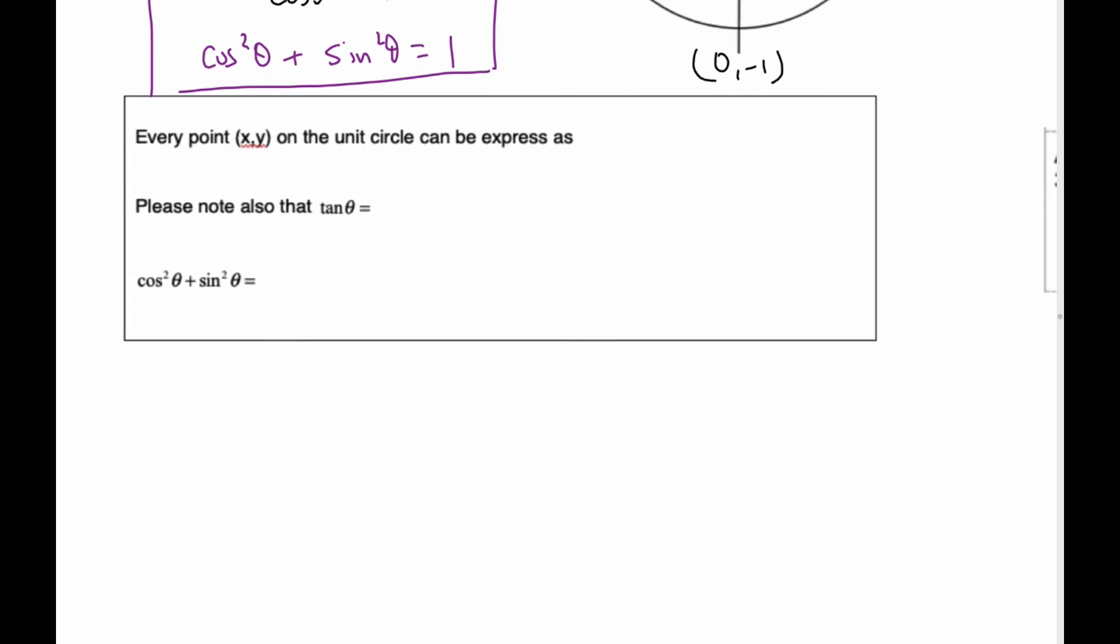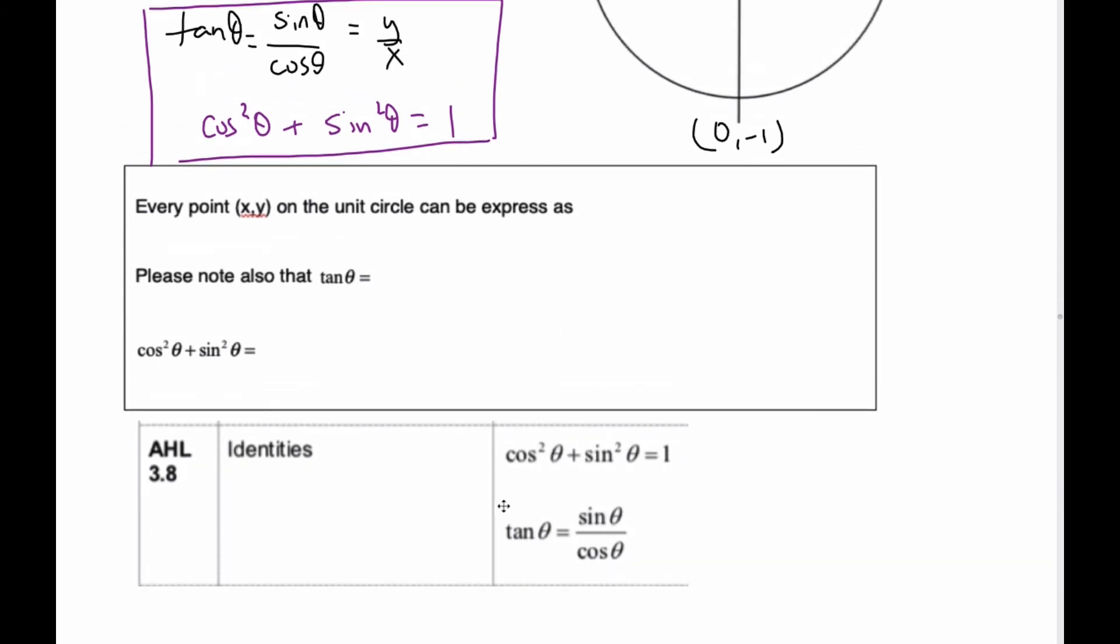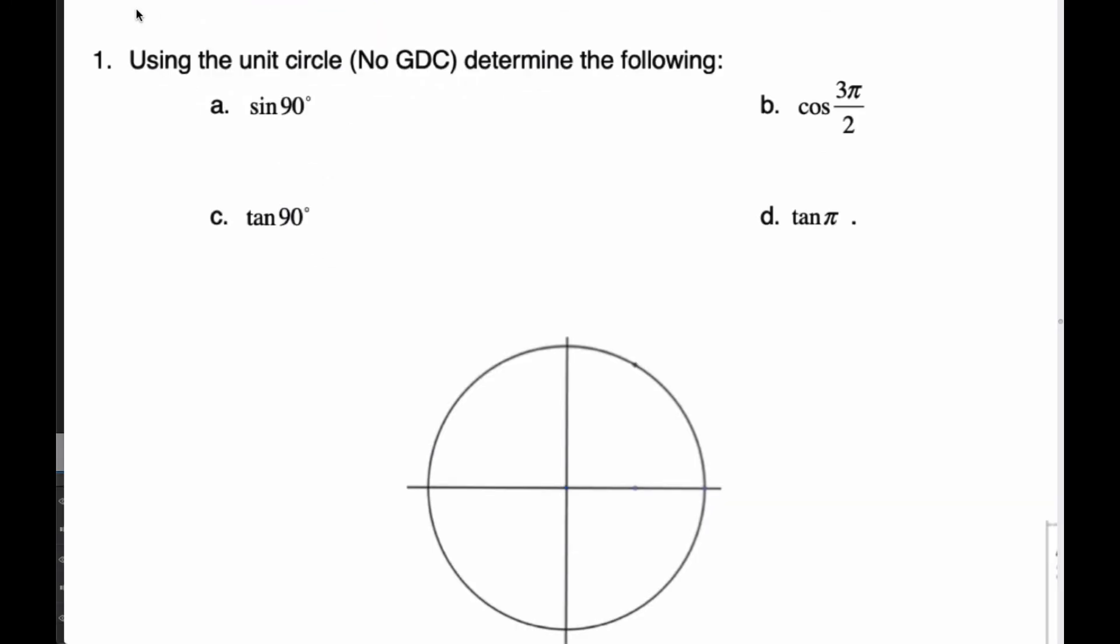From our formula booklet, these two identities can be found. This is in our formula booklet. We get the cos squared plus sine squared is one, Pythagorean identity, and then we get the tangent is the TSC. Tangent is sine over cosine as well.